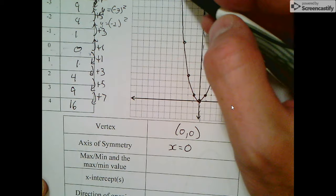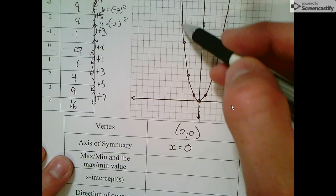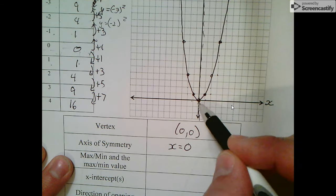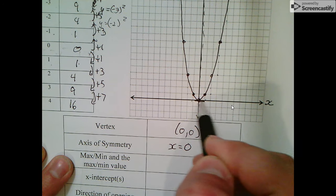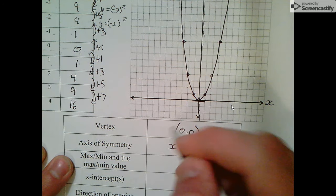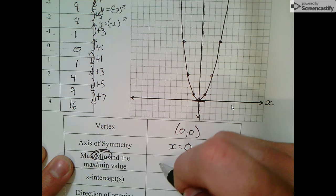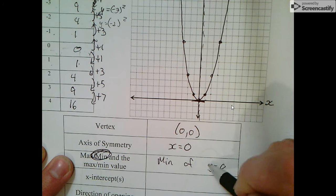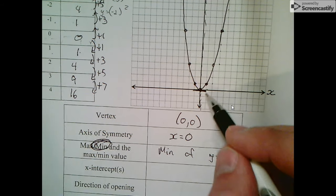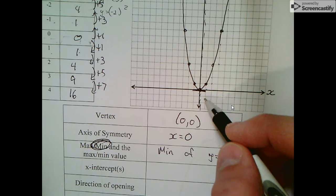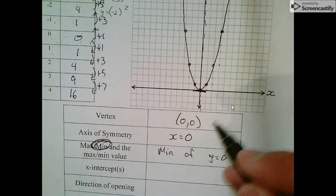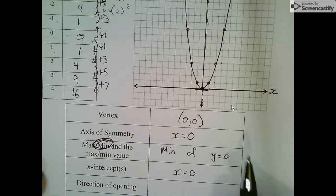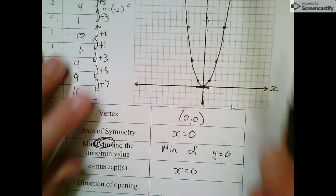Is it a max or a min? Reading from left to right, it goes down, down, down, hits the bottom, and goes back up again. So the bottom value is the y value of the vertex, which means it's a minimum of y equals 0. The x-intercept just happens to be the same as the vertex: x equals 0. It opens up like a U.